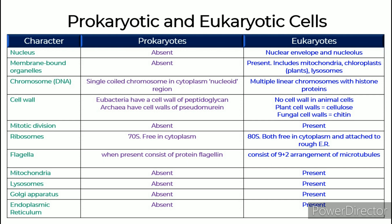Flagella: In prokaryotes, when present, flagella consist of the protein flagellin. In eukaryotes, flagella consist of a 9+2 arrangement of microtubules.